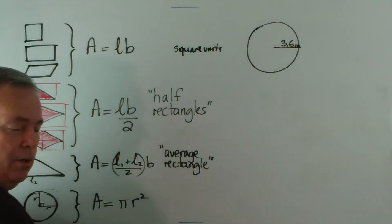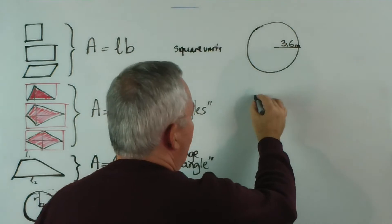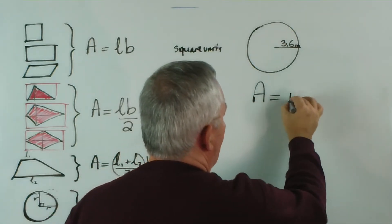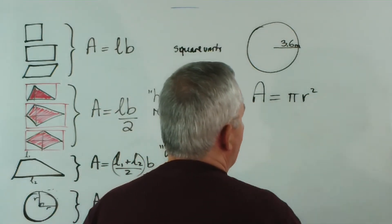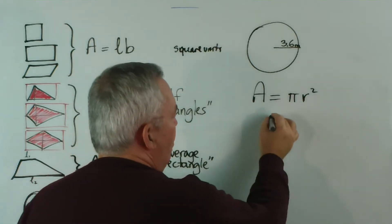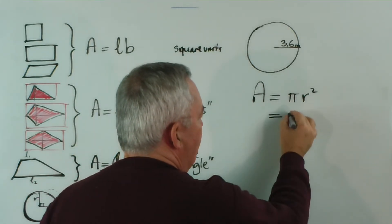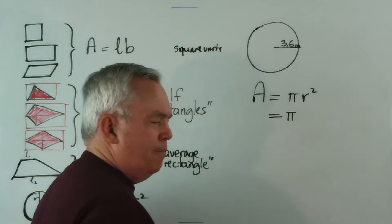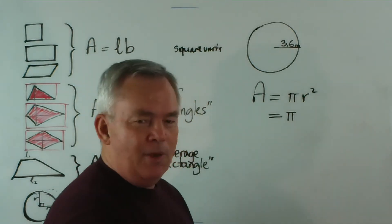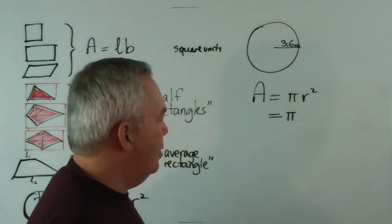How do we find its area? We use the formula for the area of a circle and write our formula first. Area equals pi times the radius squared. We substitute.